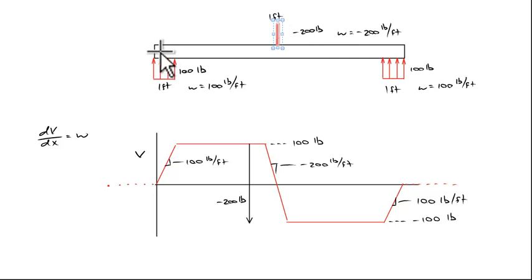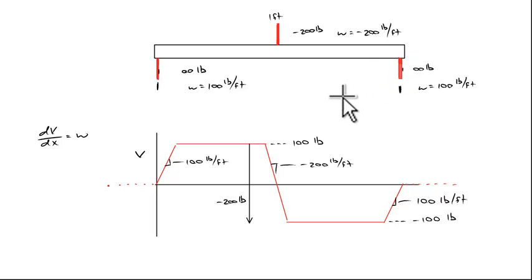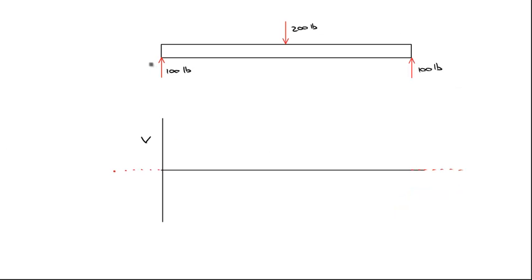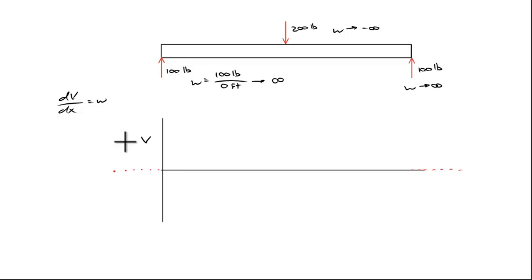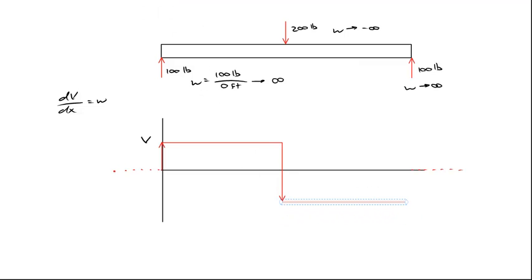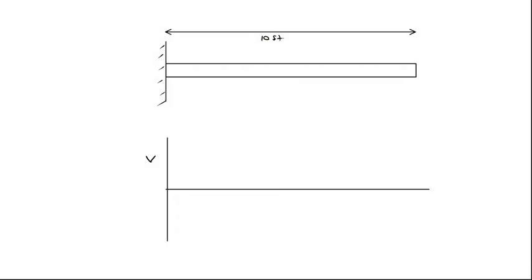Now let's talk about the hypothetical case we discussed at the beginning, in which the distributed loads are concentrated into point forces, so all of these become infinitesimally thin and turn into a single arrow. The slope will now become vertical. So for these diagrams, the shear is zero to the left of the beam, we jump straight up 100 pounds, go straight across because w equals zero between the arrows, come down 200 pounds, then it's zero to the right. Then we come back up to zero with a vertical line. That's the shear diagram for a simply supported beam with 200 pounds in the middle.